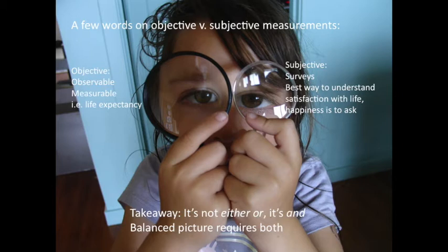We briefly addressed the difference between objective and subjective measurements when we talked about terminology. Objective measures for well-being could include aspects such as life expectancy, income inequality, and high school dropout rates. Subjective measures are essentially surveys — one is something that can be counted, and the other is a question you ask. Science has proven that the best way to find out how somebody feels or thinks about something is to ask them. It's not either-or — we need both objective and subjective measures to get a balanced picture.